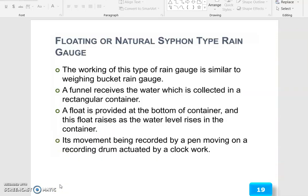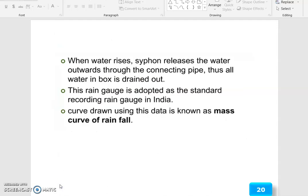The floating or natural siphon type rain gauge. The working of this type of rain gauge is similar to weighing bucket rain gauge. The funnel receives the water which is collected in a rectangular container. A float is provided at the bottom of the container and this float rises as the water level rises in the container, its movement being recorded by a pen moving on a recording drum actuated by a clockwork. When water rises, siphon releases the water outwards through the connecting pipe. Thus, all water is drained out. The rain gauge is adopted as the standard recording rain gauge in India. The curve drawn using this data is known as a mass curve of rainfall.